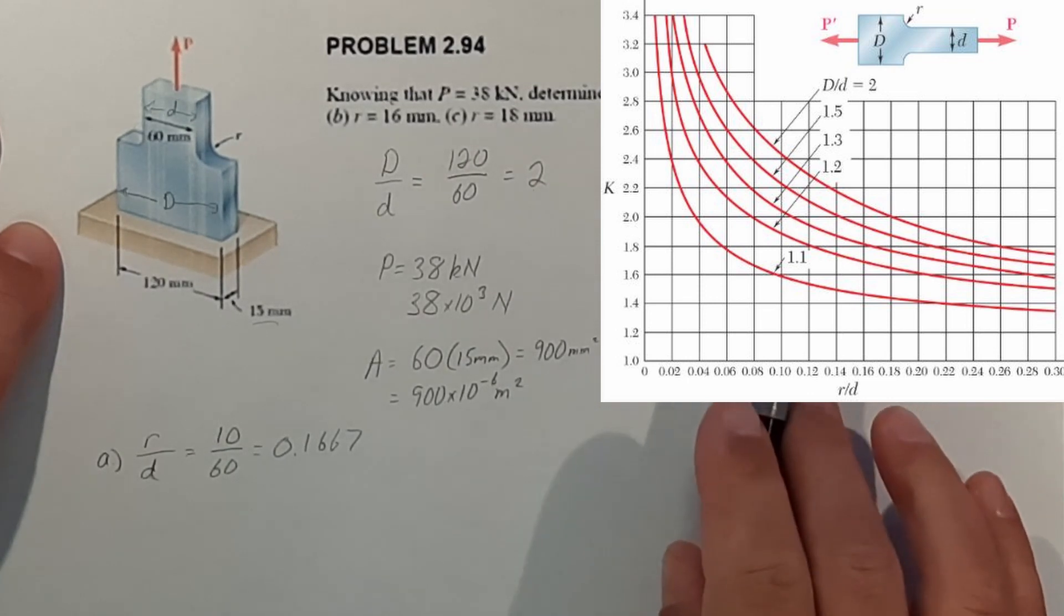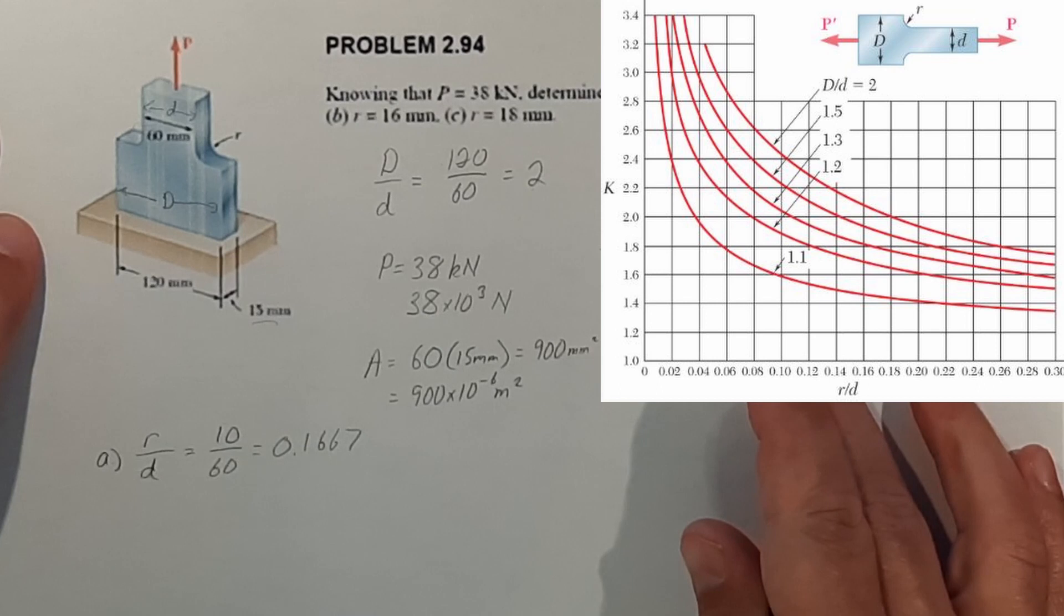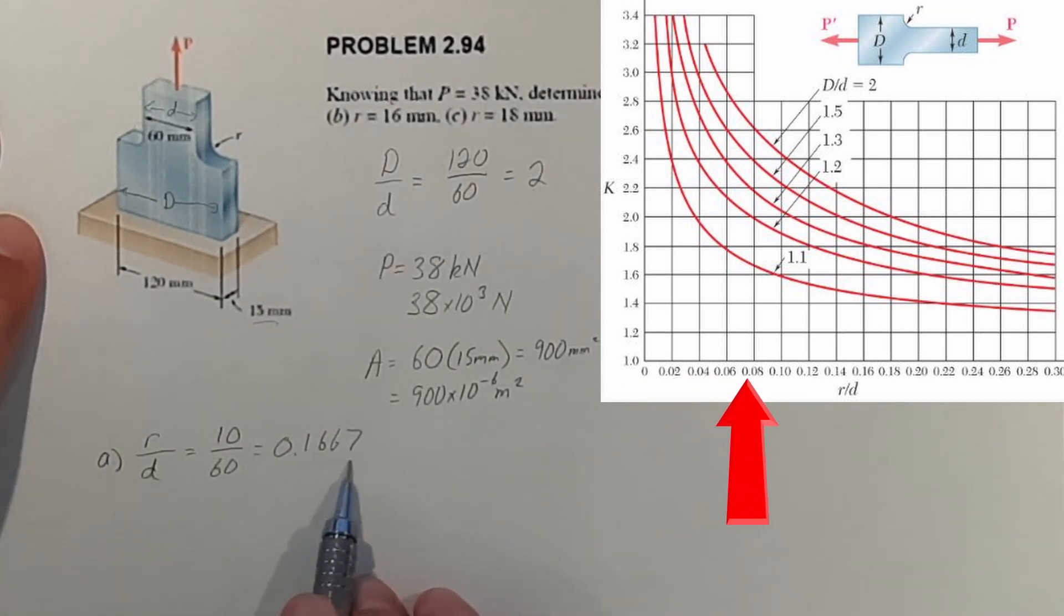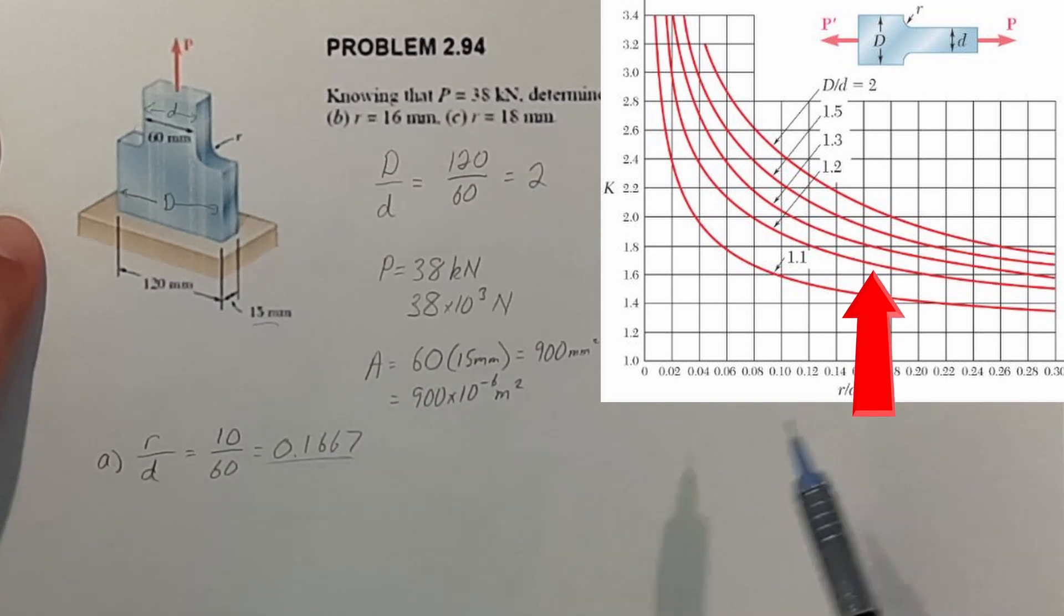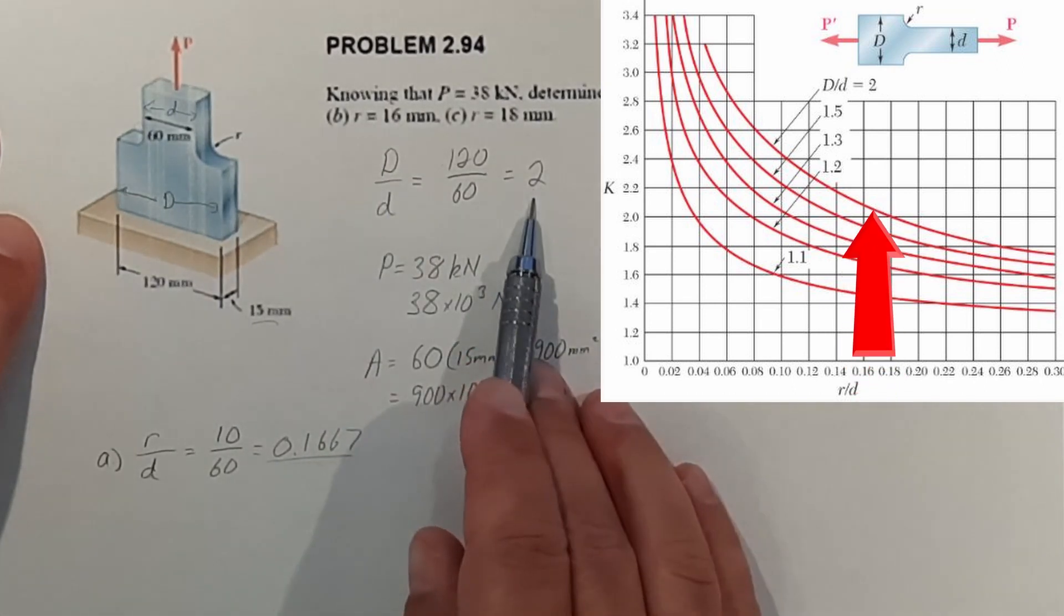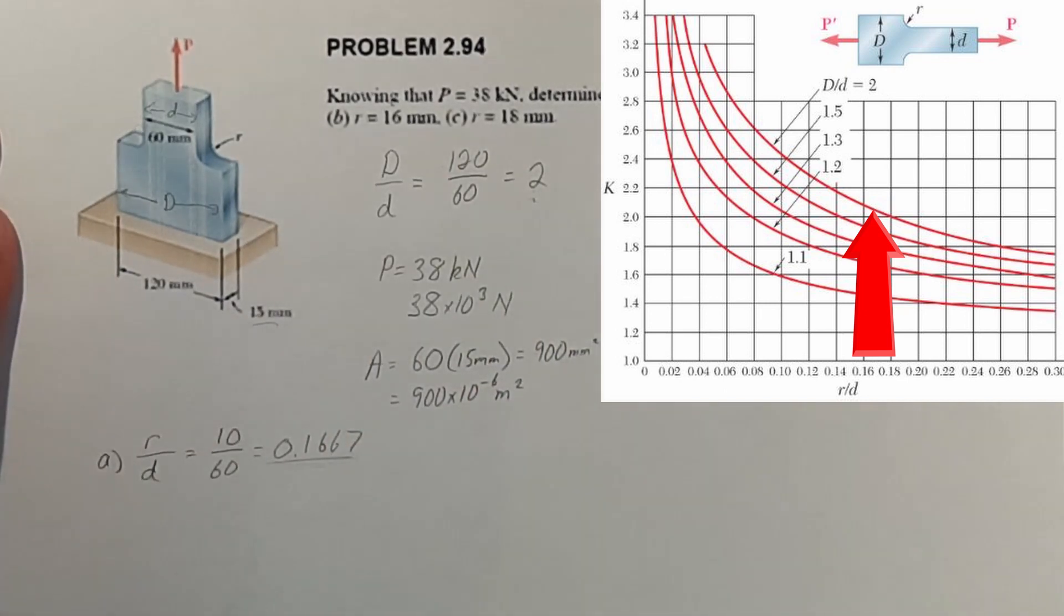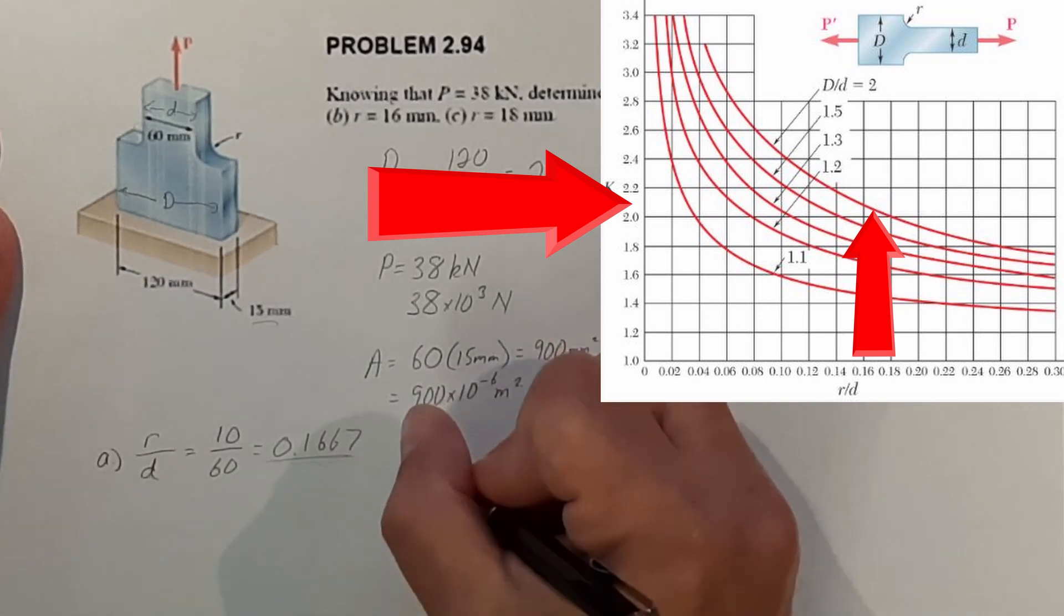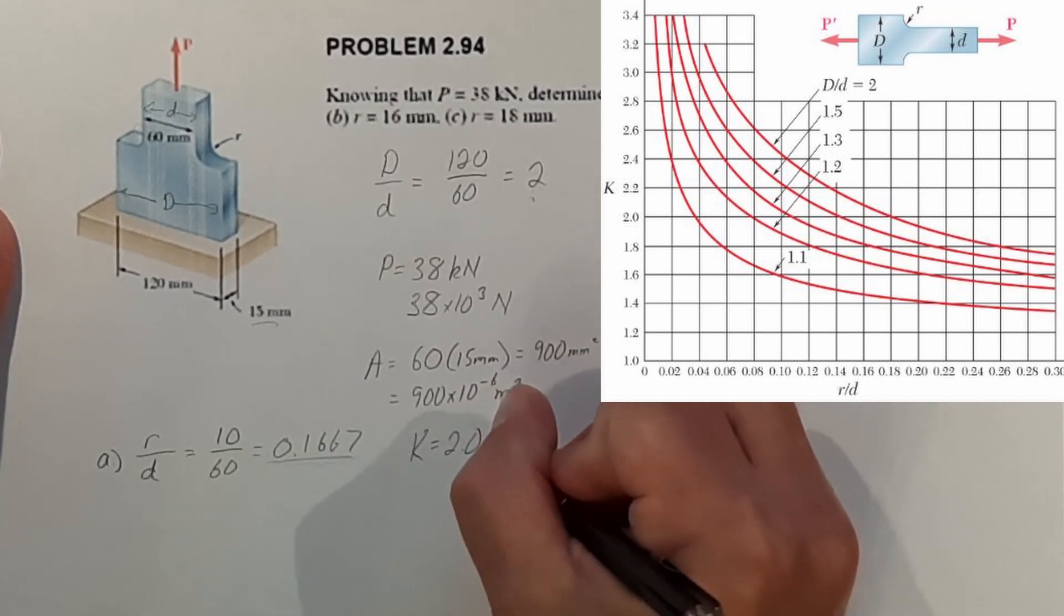Now if we go to the chart that I was talking about that has the K values already figured, across the bottom row you're going to look for this value. And once you find that value, then you go up to the line that represents your ratio of 2. And when you get there, the value on the left side of the chart will give you your K value. So this K value is equal to 2.06.